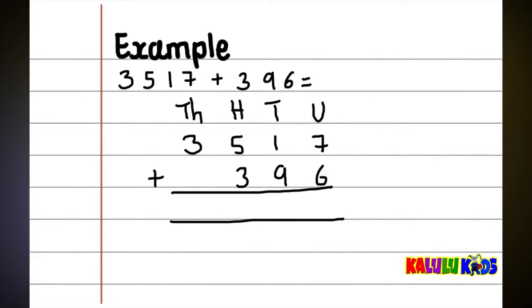Now, you go to the units column first. First, you say 7 plus 6. The answer is 13. And because 13 is 1 ten and 3 units, you only write the 3 under the units and you carry over the 1 ten to the tens column.